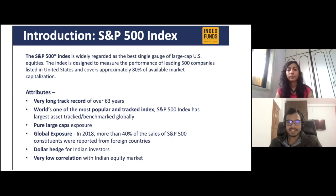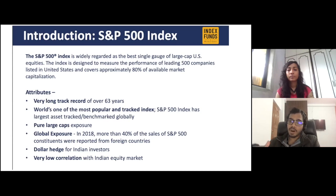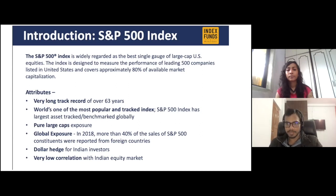One important point is that 40% of the sales of S&P 500 companies comes from outside the US. For example, Amazon and Google — many of their revenues also come from outside the US, from India, European countries, and many other countries.